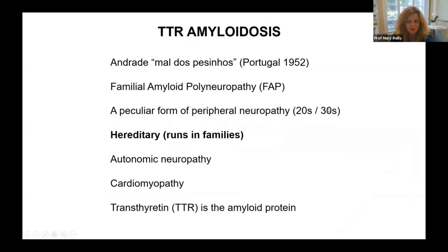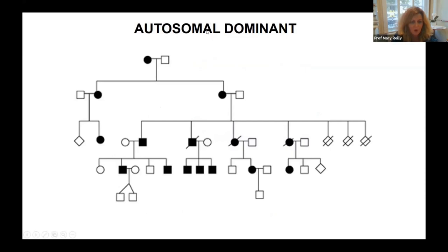When talking about TTR amyloidosis, the disease was originally described in 1952 by Andrade in Portuguese patients. At that stage it was called familial amyloid polyneuropathy, which is a name that many of you may know it by. Most patients with TTR amyloidosis have a genetic form where there is a problem with one copy of the two copies of the TTR gene, which can be inherited in a family such that children of a person with this condition have a 50% chance of inheriting the gene.